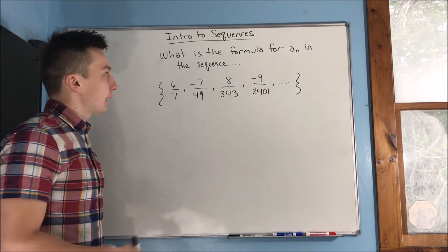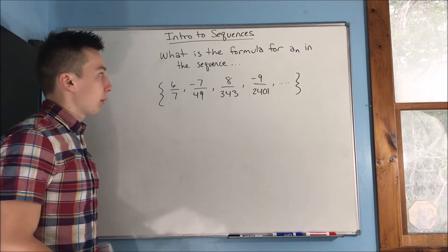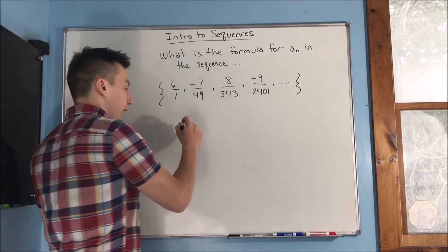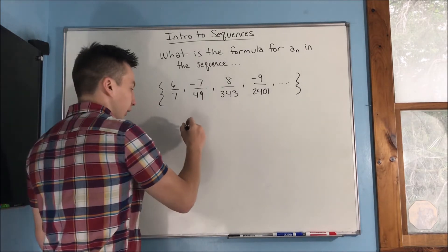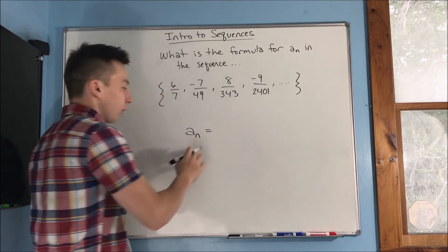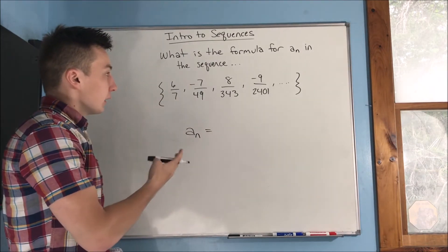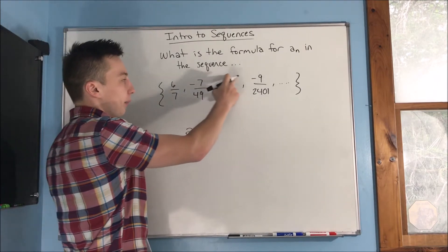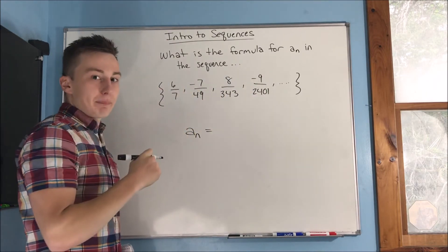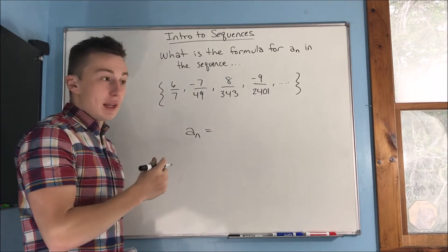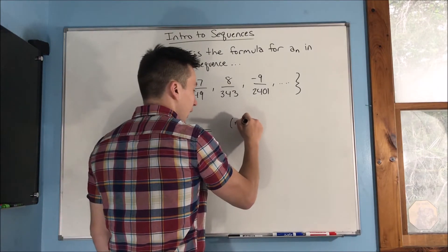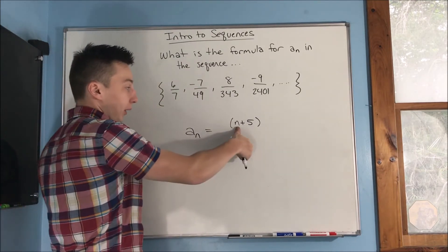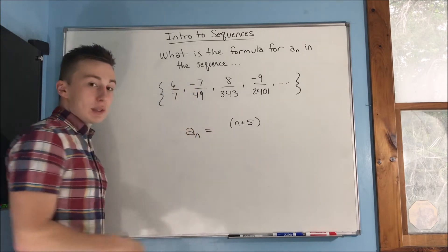Here's a quick problem: what is the formula for a sub n in this sequence? We want to find a formula describing the infinite sequence as a sub n equal to something. First, we can easily see that the numerator is going up by one every time and starts at six — this is our first term. So in the numerator we can write n plus five, because when we plug in one for n we get six.